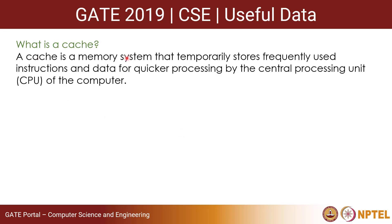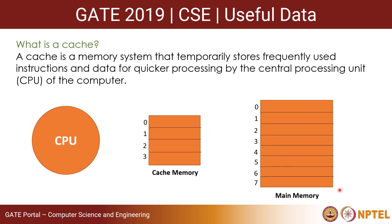What is a cache? A cache is a memory system that temporarily stores frequently used instructions and data for quicker processing by the CPU. Without cache, the CPU would continually address the main memory to get instructions and data and execute them. Since main memory is an off-chip memory, we place an on-chip memory called cache memory between the CPU and main memory, so the CPU can access it faster.